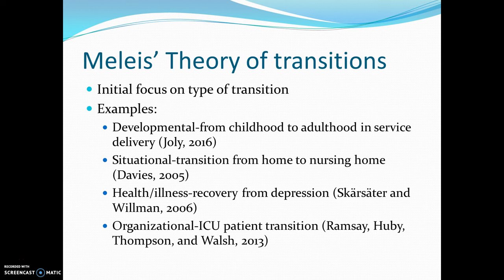The initial focus in her theory is on the type of transition that a person is experiencing. There are four different types of transitions. The first one is developmental — for example, Jolie did some work on transition from childhood to adulthood services for people with multiple medical conditions, often a time of challenge for many people. The second type of transition is situational — for example, transition from home to nursing home; Davies did a lot of work in that area in 2005.